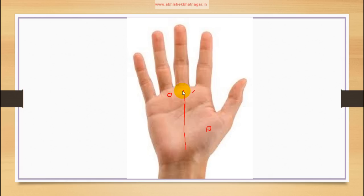The Sun line should be present. Generally the Sun line starts at the base of the palm and ends on the Sun mount. If it is not the case, it can start at a branch from the fate line and should lead to the Sun mount. This is the Sun mount and this is the line, and it will also be joined with this line.